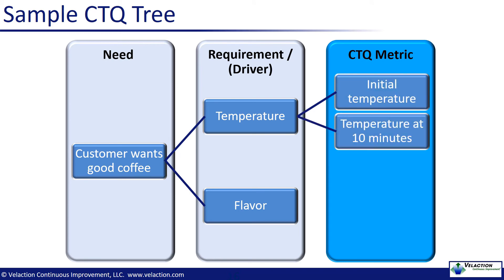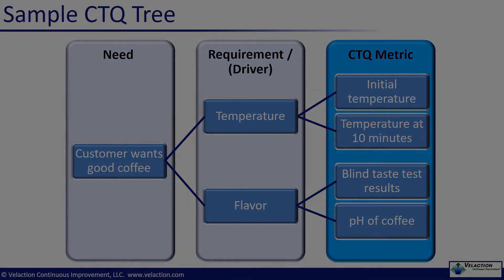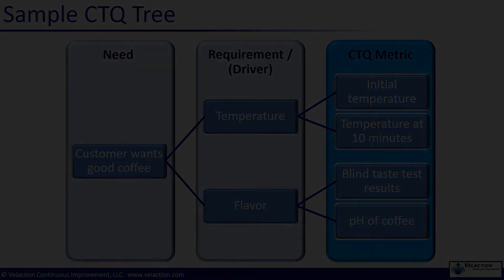Those metrics might take a bit of thought on your part. While something like temperature seems rather straightforward, your customers may have their own unique views on it. You might want a process metric that lets you know you are brewing the coffee at the right temperature. You may also have an output metric that gauges temperature from a coffee drinker standpoint — measuring at 10 minutes after purchase, when they get back to their desks, might be how they view temperature. As far as something subjective like flavor, you have two possible paths that you could take.